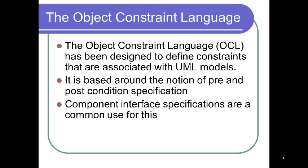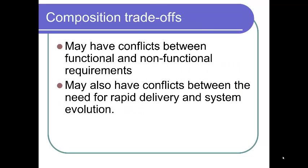The Object Constraint Language, or OCL, has been designed to define constraints associated with UML models. It is based around the notion of pre- and post-condition component specification, and component interface specifications are a common use for it. You may remember pre- and post-conditions as axiomatic semantics discussed back in Chapter 10. You may also have conflicts between functional and non-functional requirements, and between the need for rapid delivery and system evolution.